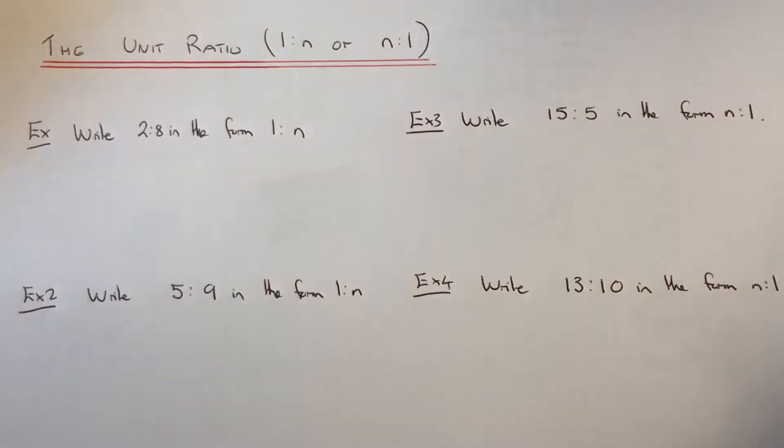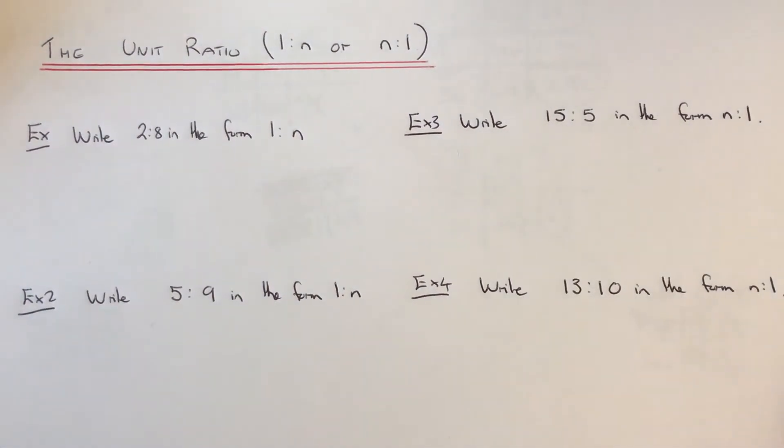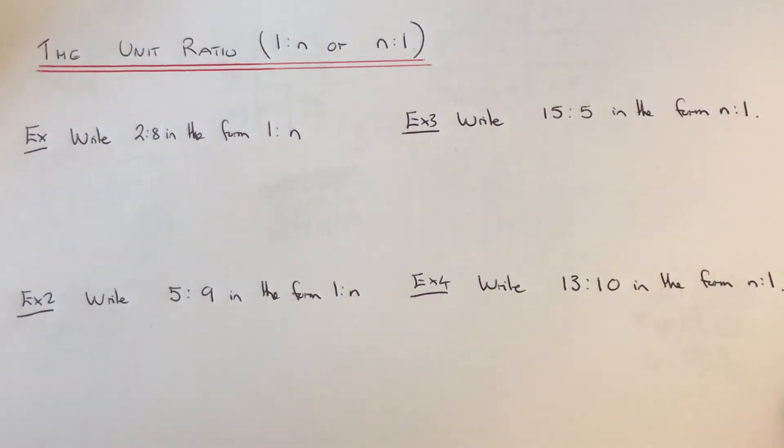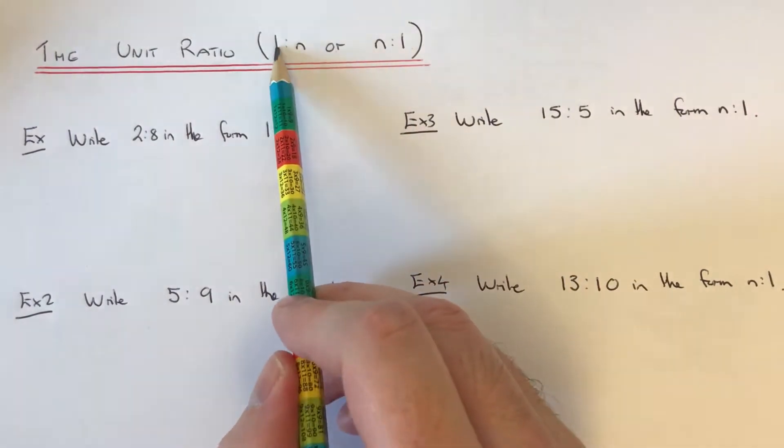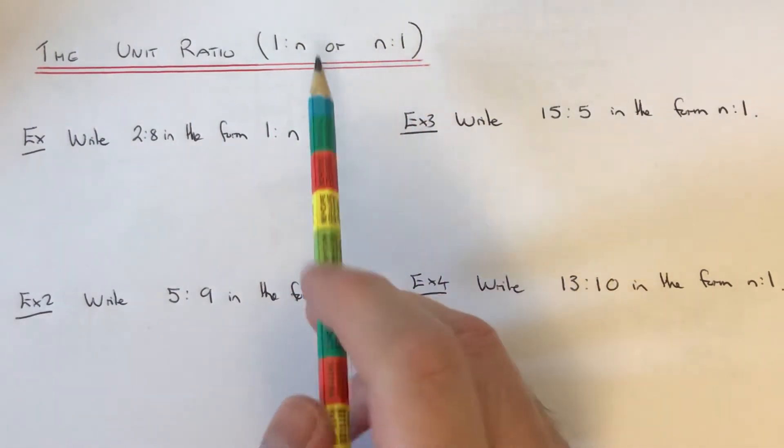Hi guys, welcome back. This is Maths3000. Today I'm going to show you how to write down the unit ratio. So that's where you have to write the ratio in the form 1 to N or N to 1.